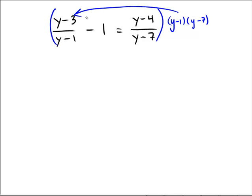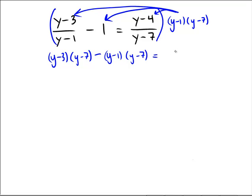So over here, y minus 1s cancel, and we'd have y minus 3 times y minus 7. In the next position, minus 1 times nothing cancels, so we have a y minus 1 and a y minus 7. And in the last position, on the right of the equality, the y minus 7s cancel, so we'd have a y minus 4 and a y minus 1.